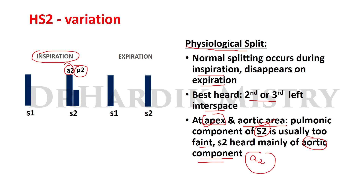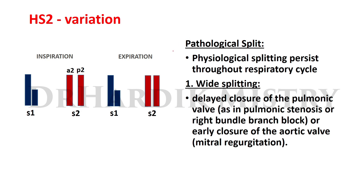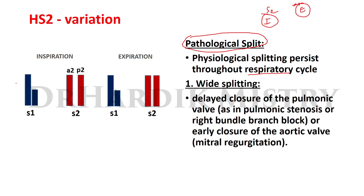Pathological splitting of the second heart sound means physiological splitting that persists throughout the respiratory cycle. Normally, splitting occurs during inspiration but the second heart sound is heard as a single sound during expiration. In pathological splitting, the splitting that occurs during inspiration also happens during expiration. The first type is wide splitting, due to delayed closure of the pulmonic valve as in pulmonic stenosis or right bundle branch block.